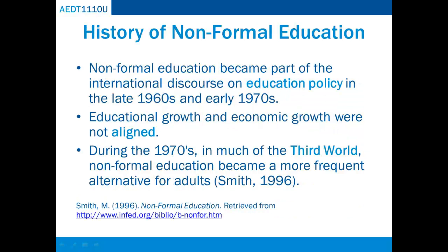Non-formal education became part of the international discourse on educational policy in the late 1960s and early 1970s. There was a realization that educational growth and economic growth were not necessarily in step, and that jobs did not emerge directly as a result of educational inputs. Many countries were finding it difficult to pay for the expansion of formal education, and there was a growing feeling that formal educational systems had adapted too slowly to the socioeconomic changes around them. During the 1970s, in much of the Third World, non-formal education became a more frequent alternative for adults who were either unserved or poorly served by schools, or who needed to supplement their schooling. In these instances, non-formal education often assisted in bringing educational services to a rapidly growing population that could not be adequately addressed through formal schooling.